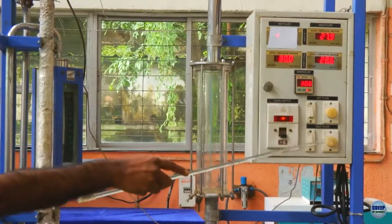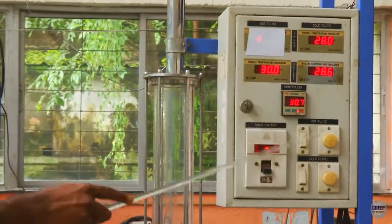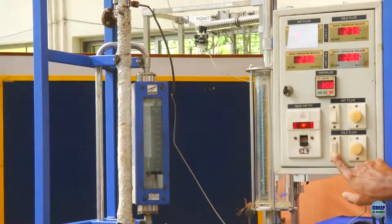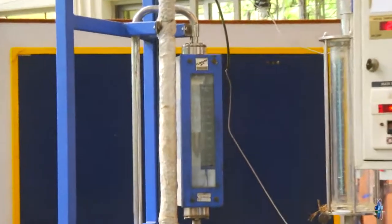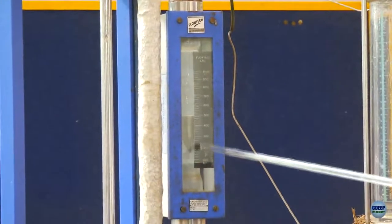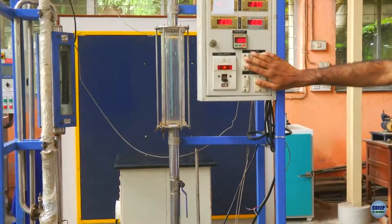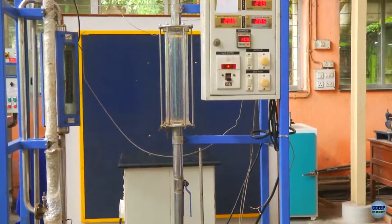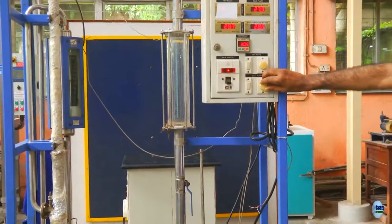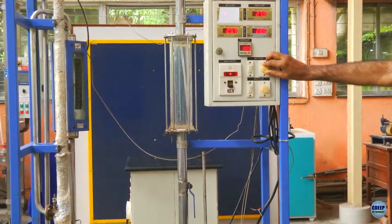These two regulators are used to control the pump speed for the hot and the cold fluid. The flow rate of the cold fluid is measured using this rotameter. For the hot fluid, the flow rate is measured using this measuring cylinder. The reason is rotameters cannot measure low flow rates required for laminar flow.